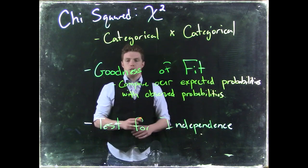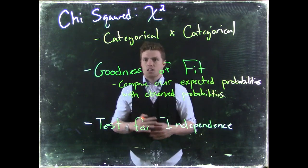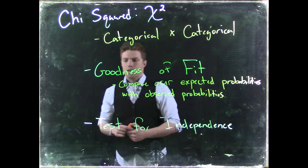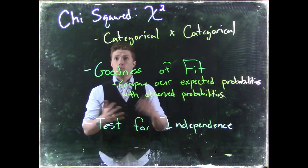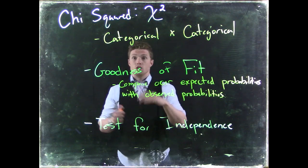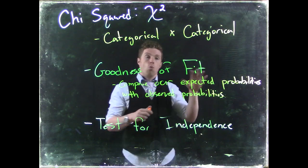The second method that we can use is test for independence. Our test for independence means that we gather lots of data. So like maybe we gather your gender and we gather your major. And we want to see, does your gender, is it related to what your major is?